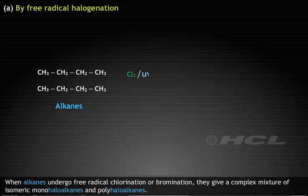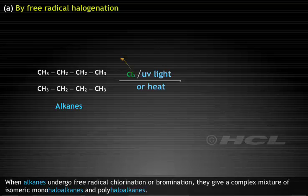Hydrocarbons by free radical halogenation. When alkanes undergo free radical chlorination or bromination, they give a complex mixture of isomeric monohaloalkanes and polyhaloalkanes.